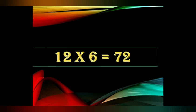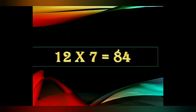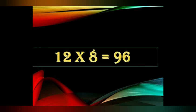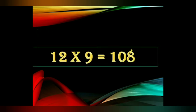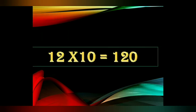Twelve sixes are seventy-two. Twelve sevens are eighty-four. Twelve eights are ninety-six. Twelve nines are one hundred and eight. Twelve tens are one hundred and twenty.